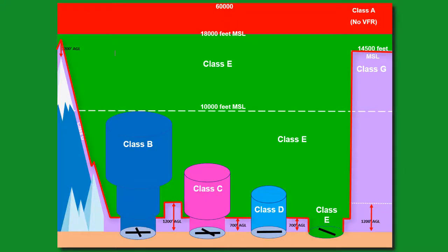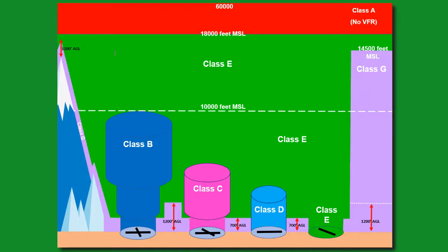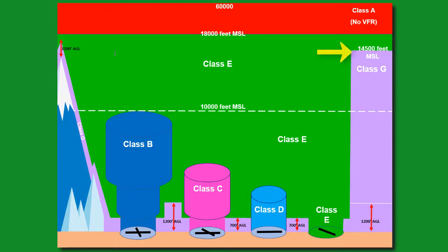Class G airspace starts at the surface until reaching Class E airspace, except for airports where their airspace reaches the surface. Class G is uncontrolled airspace that mostly reaches 1,200 feet above ground level, but sometimes reaches up to 700 feet above ground level. On rare occasions, it can climb as high as 14,500 feet MSL due to restrictions from other airspace and navigation station limitations, such as signal issues caused by terrain.